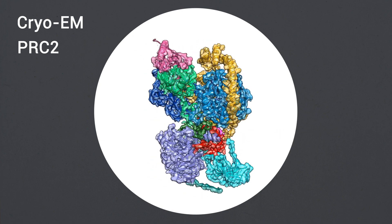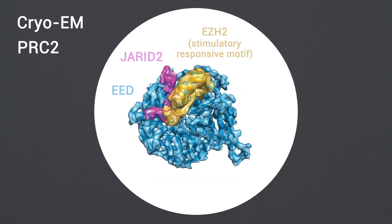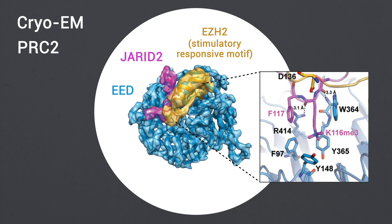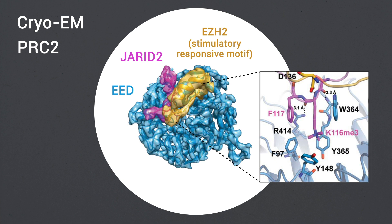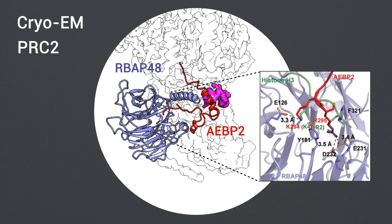We found that both cofactors mimic the binding of histone H3 tails. JARID2, methylated by PRC2, mimics a methylated H3 tail to stimulate PRC2 activity, whereas AEBP2 interacts with the RBAP48 subunit, mimicking an unmodified H3 tail.